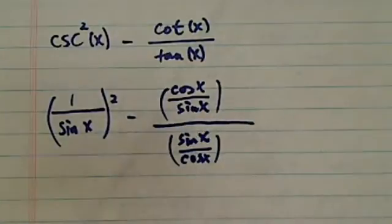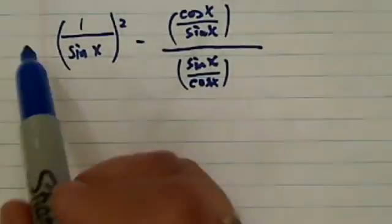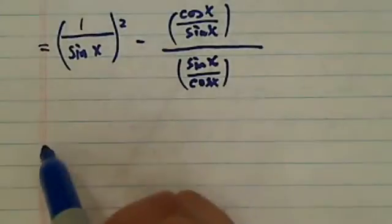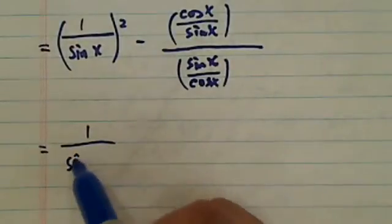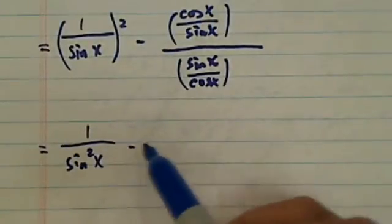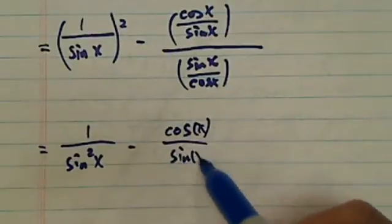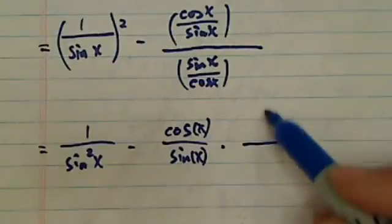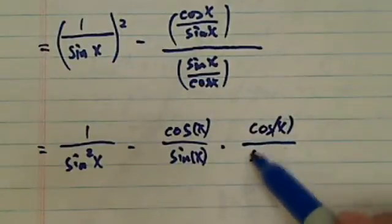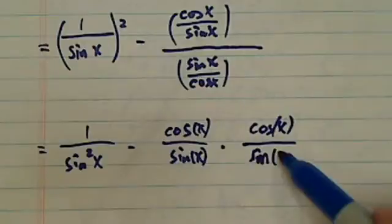OK, so in this step all I did is I expressed everything into sine and cosine. And then here we have sine squared x minus, we're going to keep the top because this is a fraction, and we're going to multiply the inverse, which is a flipped version of the bottom, OK?